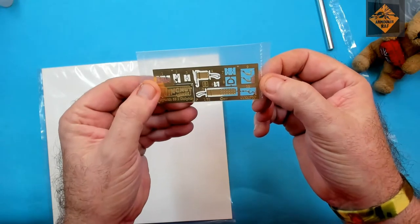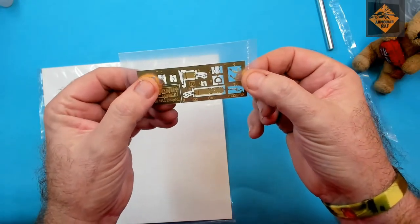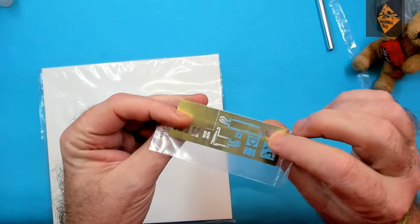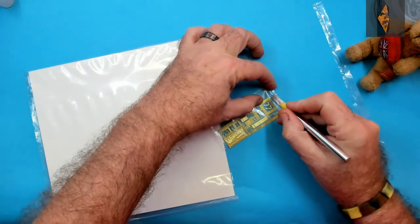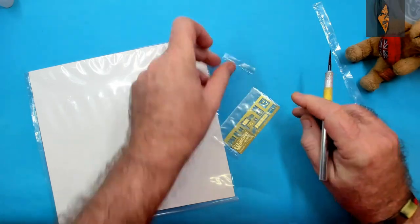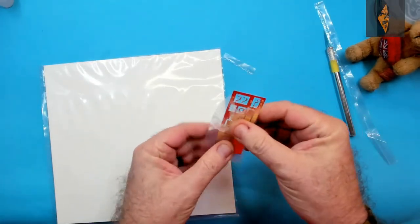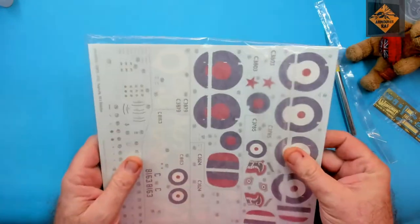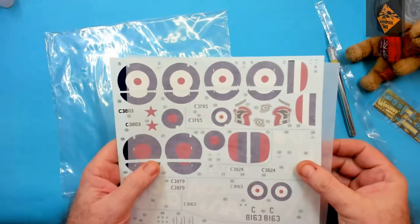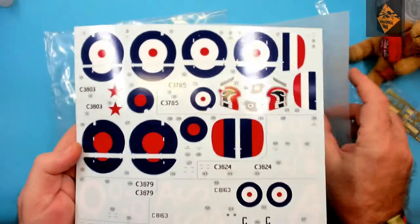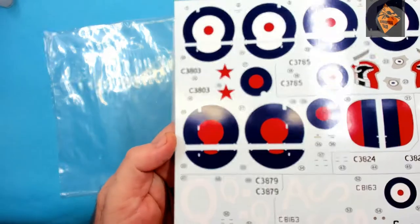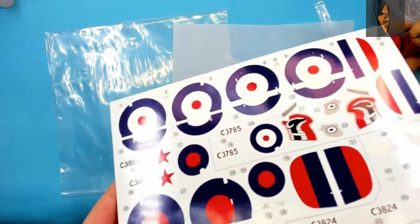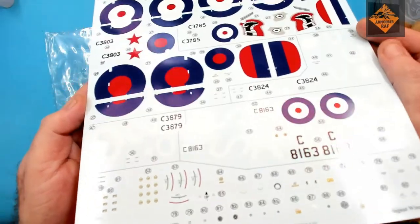As you know with my previous build, the Fokker Dreidecker, these PE parts are not like the main ones. I'm probably going to have to put some tape on the back. Yep, there's no tape on that. Oh, those decals look amazing. Very, very little carrier film on that. As you can see, that is just awesome. Awesome.